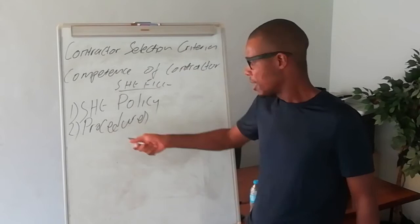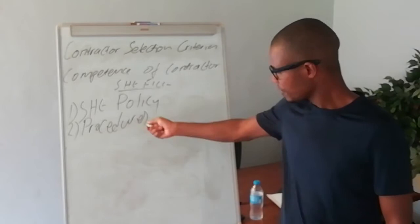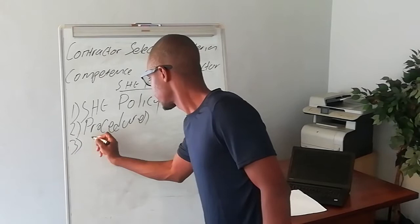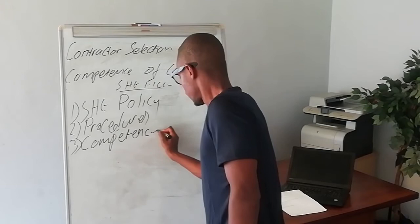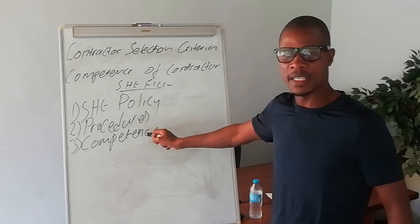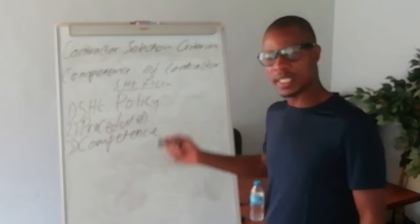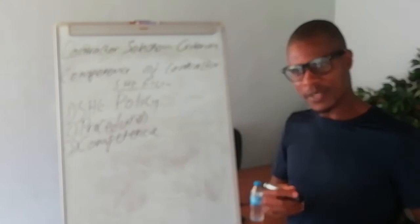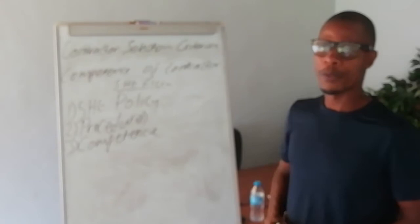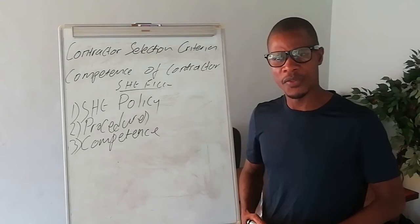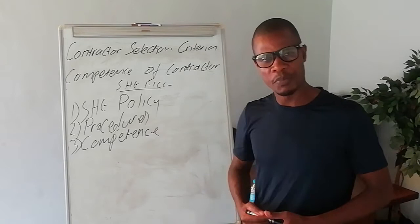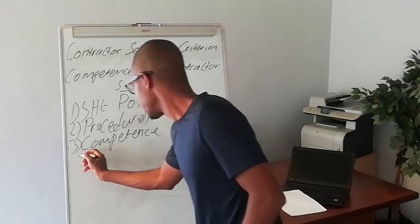Competence is also there in the SHE file, and it's part and parcel of what is required in the contractor selection criteria as well as the competence of a contractor. When we say competence, we mean the competence of the team that is going to be on the ground. In your safety file, you normally submit the CVs of your safety officer and the CVs of the key personnel that will be on the ground. So we say competency, or the experience of the people that are going to be on the ground.